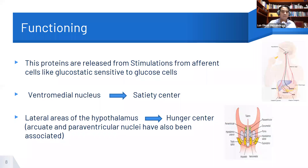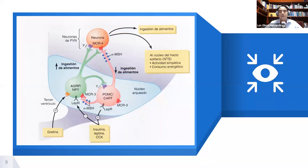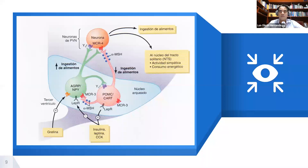Within these centers, the signals are interpreted by two groups of neurons: orexigenic neurons and anorectic neurons. These, in turn, send information to effector neurons through the activation or inhibition of the MCR3 and MCR4 receptors, and these neurons will be responsible for modifying the metabolic response according to needs.